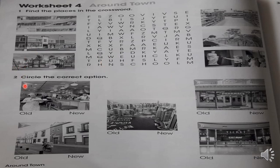Activity number 2: Circle the correct option. Vamos a observar las imágenes y vamos a circular la palabra old o la palabra new. Old que significa antiguo y new que significa nuevo. De acuerdo a la imagen que observamos, ¿creen que esto es un restaurante antiguo o nuevo? Es un restaurante nuevo, por lo que vemos la infraestructura. Cuando terminen de desarrollar estas dos actividades de la página 34, lo van a tomar una foto y me la van a enviar como tarea.